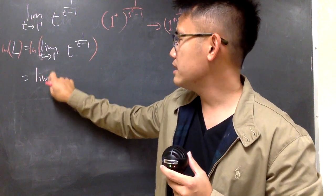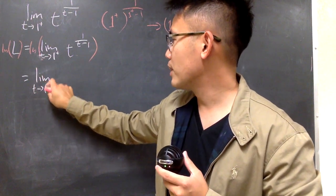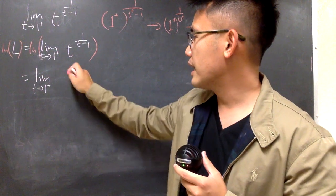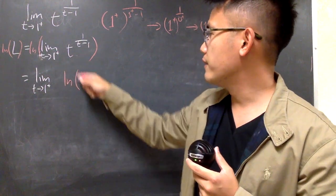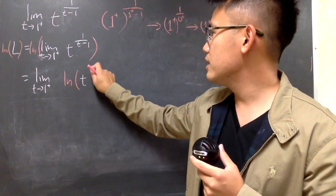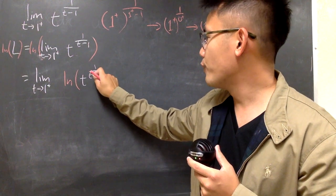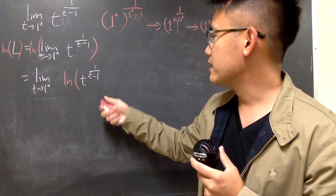And I will just write down the limit as t goes to 1 plus, and we are looking at ln of t to the 1 over t minus 1, like this.